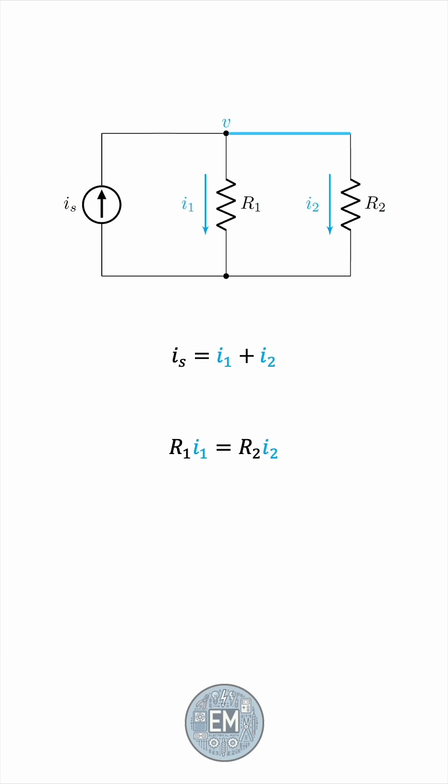We'll solve for I1, for example, by rewriting I2 as Is minus I1, from the first KCL equation.